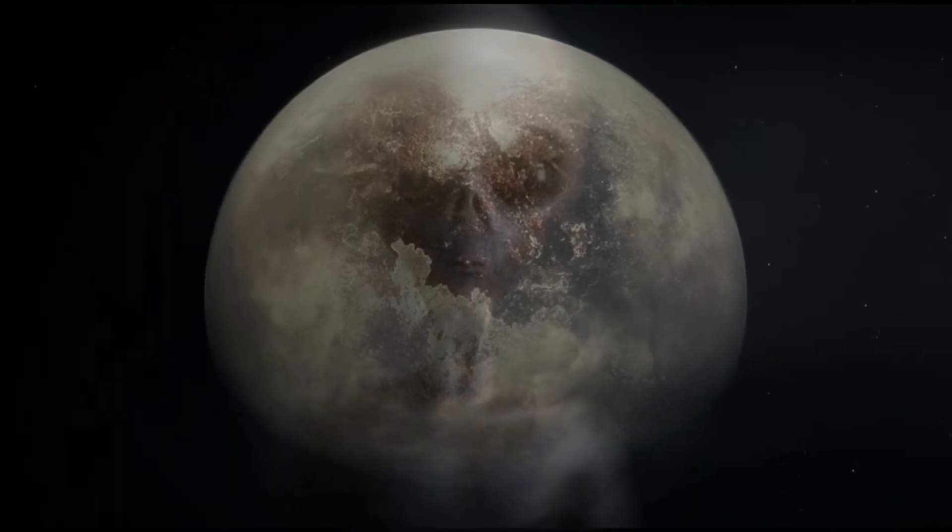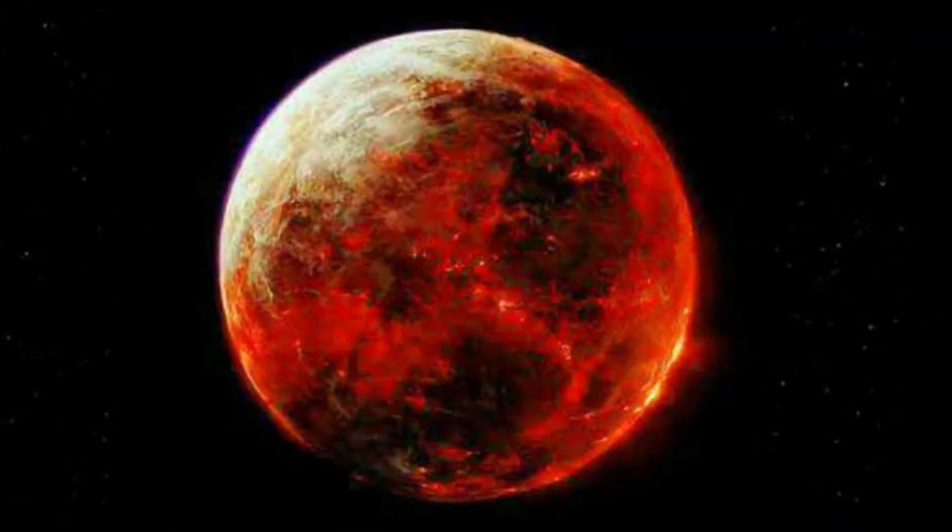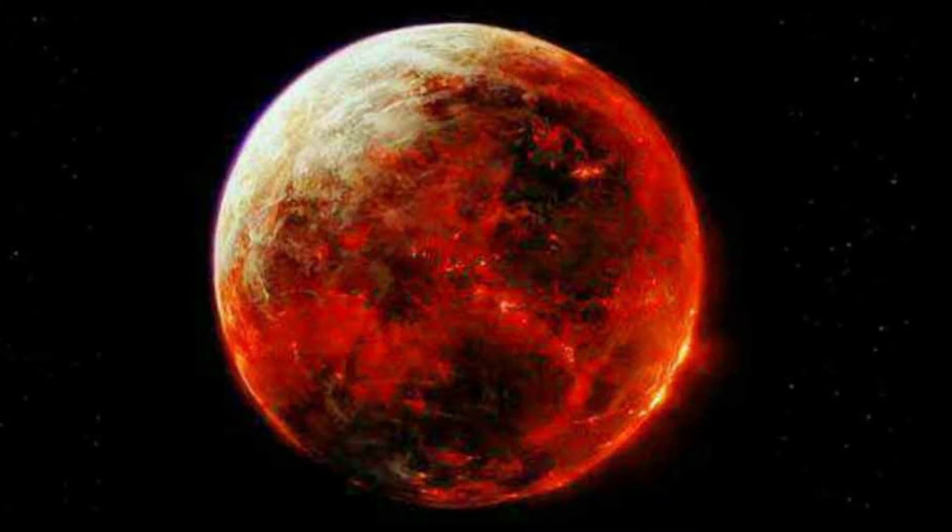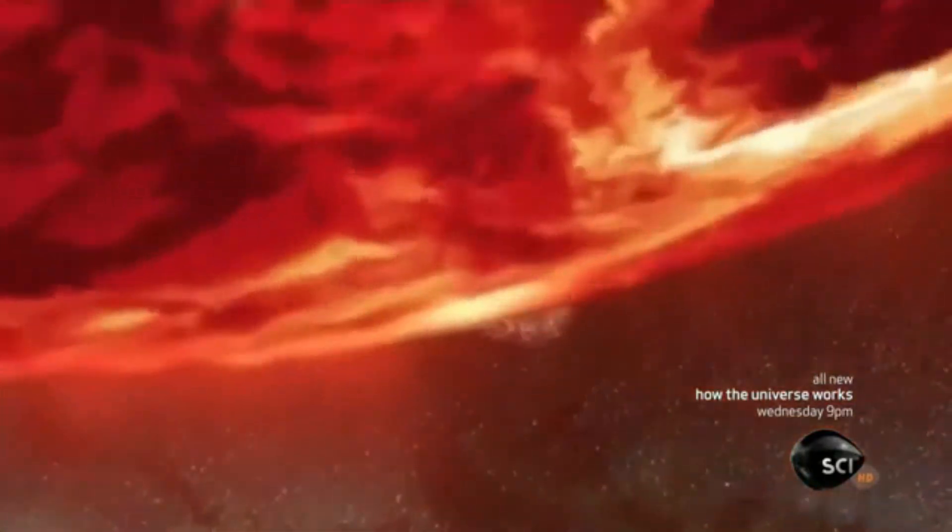Number 4: CoRoT-7b. It is 489 light years away from Earth and its size is 70% larger than Earth. The reason the sunrise on this planet looks so intense is because it is 60 times closer to its star than we are to our sun.